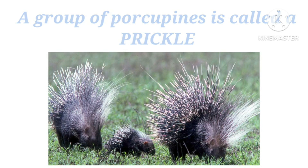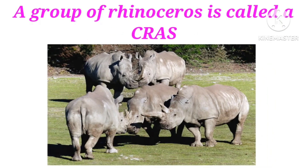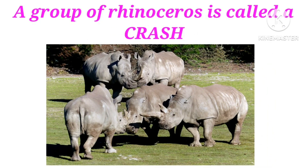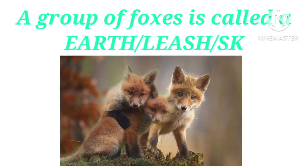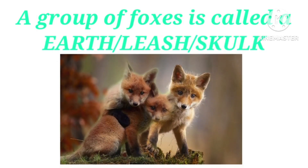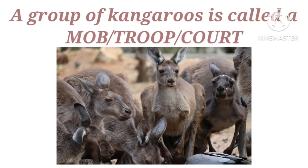A group of porcupines is called a prickle. A group of rhinoceros is called a crash. A group of foxes is called an earth, leash, or skulk. A group of kangaroos is called a troop.